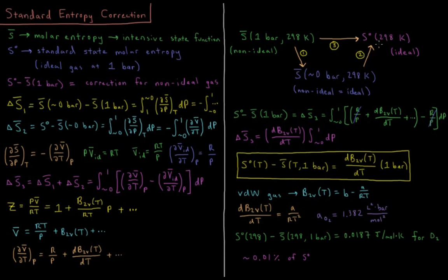Since entropy is a state function, it doesn't matter what path we take — only the initial and final states matter. So we'll calculate the entropy change as we take our real gas from one bar down to approximately zero bar, where all gases behave ideally and non-ideal and ideal gases are the same. We get it low enough that the gas behaves ideally, but not exactly zero since some equations diverge.